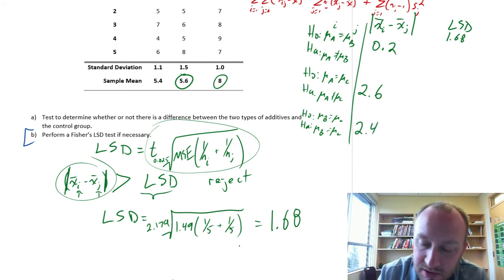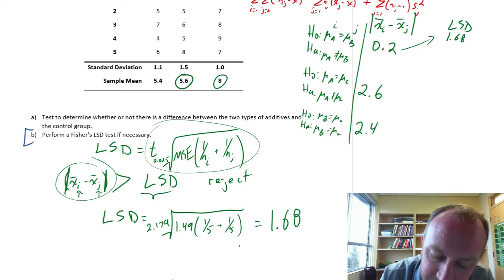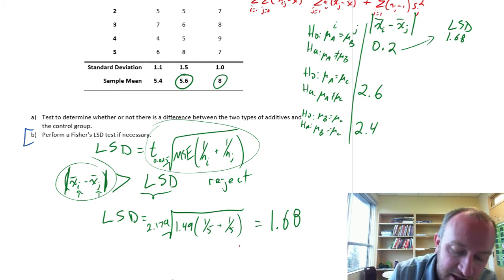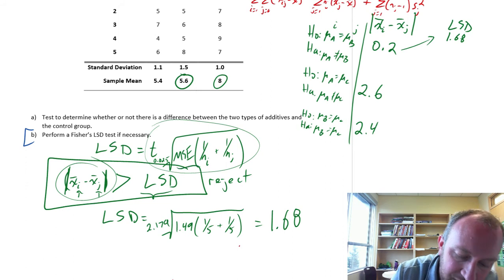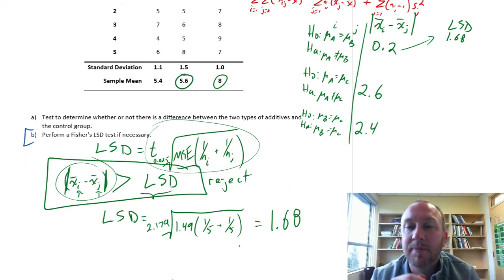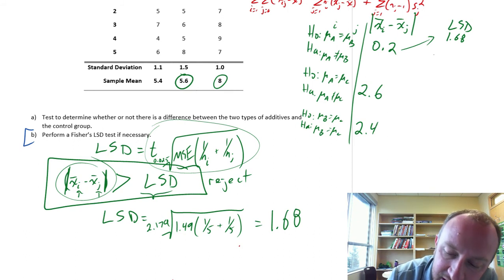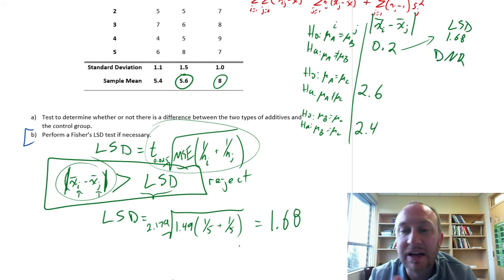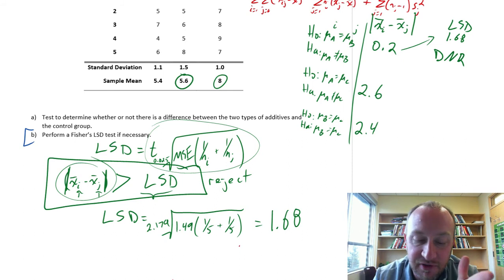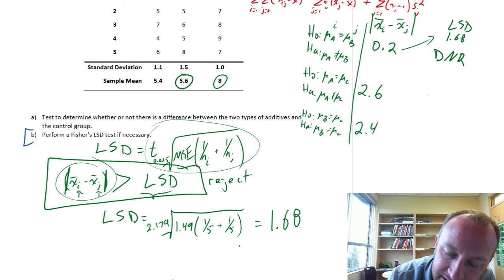Now, for each of those, we just compare them against Fisher's LSD. And we reject for any comparison where the absolute value of the point estimate of the difference in sample means is greater than the LSD. For this first pairing, we do not reject. Meaning, we don't have evidence to show that there's a difference between sample a and sample b. Comparing a and c, 2.6 is greater than 1.68. We can reject.